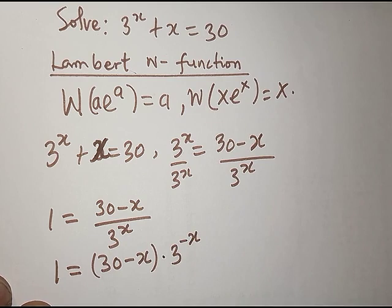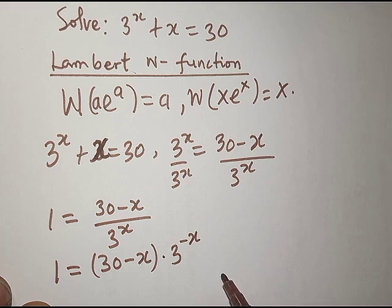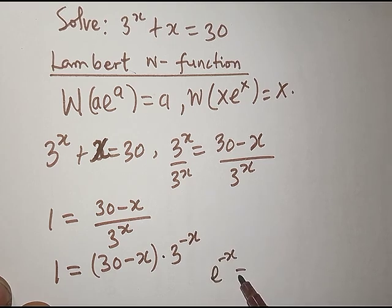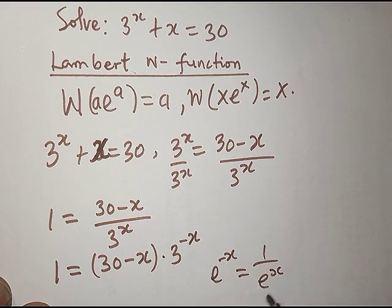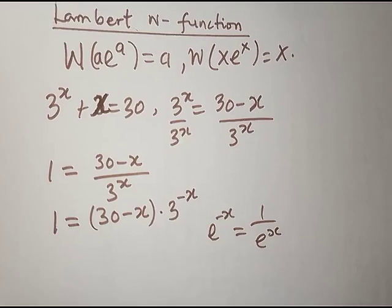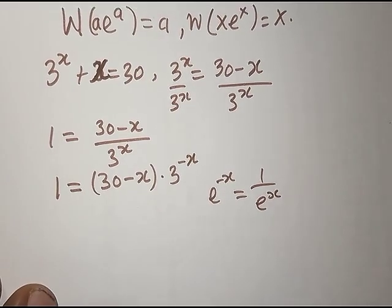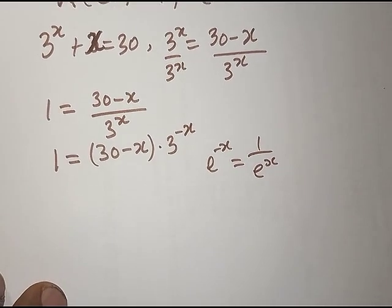From the law of indices, when you have a^(−x) this gives you 1 over a^x. That is what we apply here as we continue.